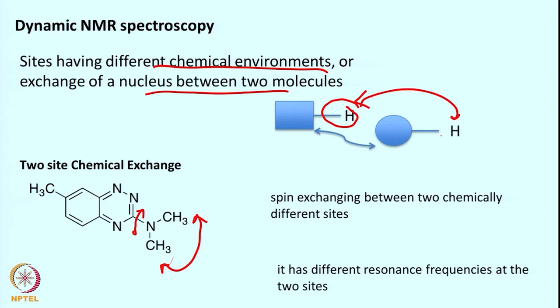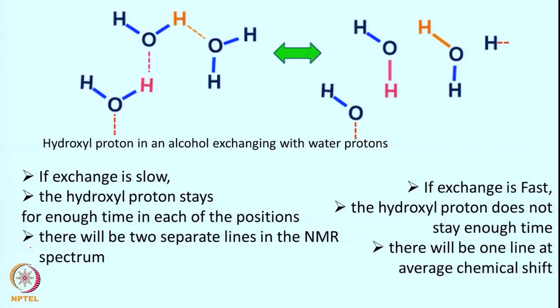As we know, the resonance frequency for any proton depends upon the chemical environment. Now this spin is swapping between two states, so their resonance frequency can also be different — this proton is swapping between two different frequencies. For example, take the hydroxyl ion in alcohol: OH can exchange between bulk water. This OH, being labile, can go to the bulk water and come back. Hydroxyl proton in alcohol exchanging with bulk water — such a phenomenon also comes under the purview of chemical exchange.